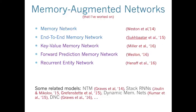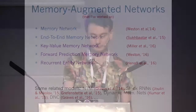So models that we've worked on in my group — some of them are listed here. We've worked on this class of models that we call memory networks, and there are sort of variations of it that we've developed: there's an end-to-end memory network, a key-value memory network this year, a forward prediction memory network which uses indirect supervision by predicting the future dialogue, and also just very recently something we call recurrent entity network as well. I've also put some related models down there, but there are many more.